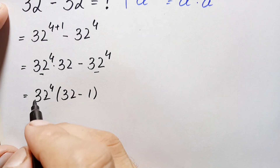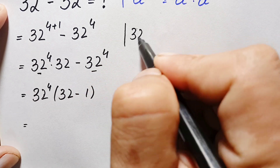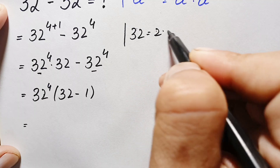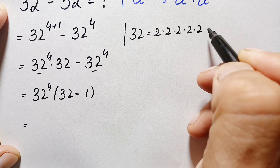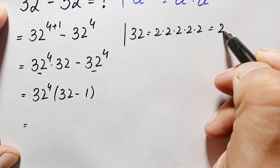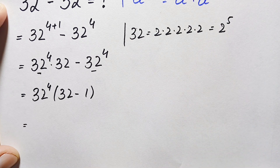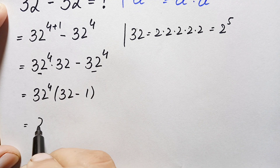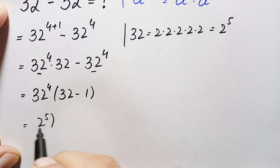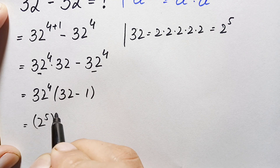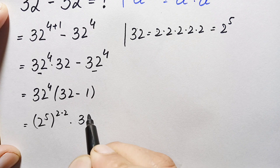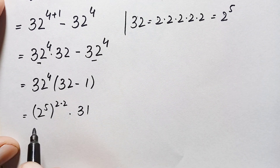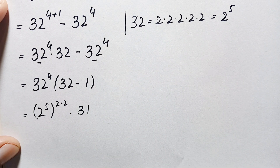Next, we can write 32 as: 2 times 2 is 4, 4 times 2 is 8, 8 times 2 is 16, 16 times 2 is 32 — so 32 is the same as 2 raised to power 5. Here we replace this 32 with 2 raised to power 5, and the power becomes 2 raised to power 5, all raised to power 4, times 31.